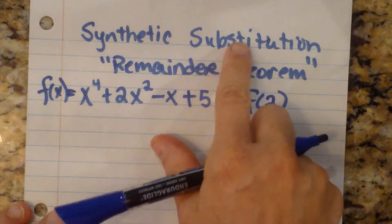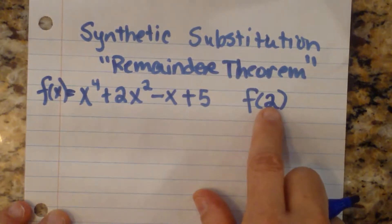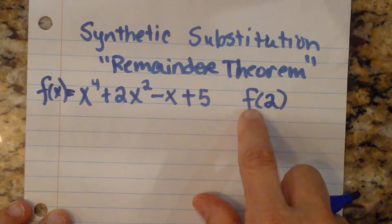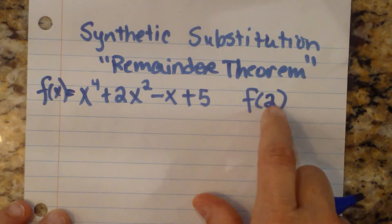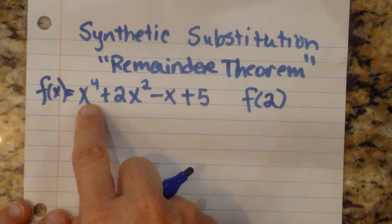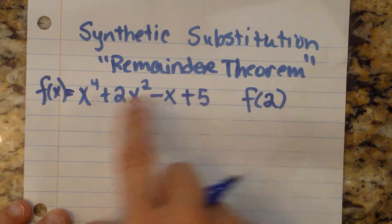You can substitute values into a polynomial by simply taking f of 2 in function notation. What that means is for the function, everywhere there's an x, you're going to plug in 2. So you can plug that in and evaluate.